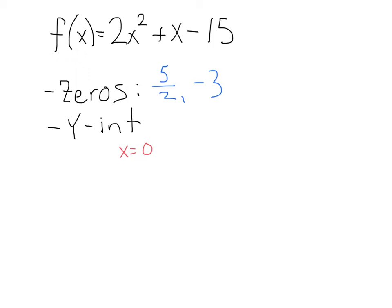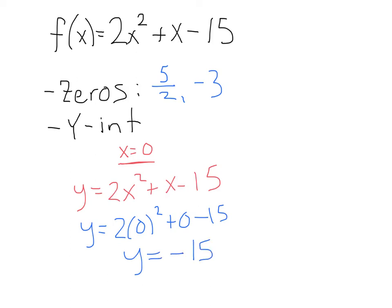If I plug in x = 0 for each of these x's, that gives me y = 2(0)² + 0 - 15. We're left with y = -15. So my y-intercept is at the point (0, -15).